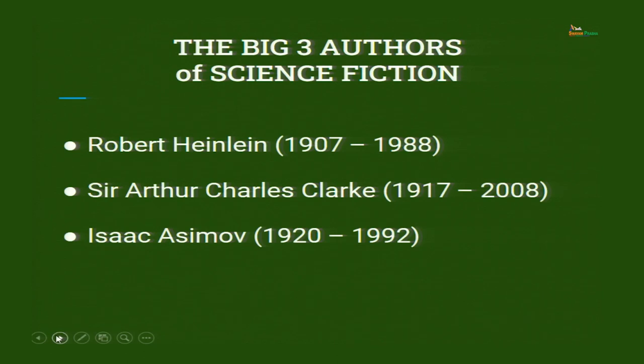In the previous lecture, I first mentioned the Big Three. The Big Three of science fiction are Robert Heinlein, Sir Arthur Charles Clarke, and Isaac Asimov. These three people have contributed immensely to the domain of science fiction.